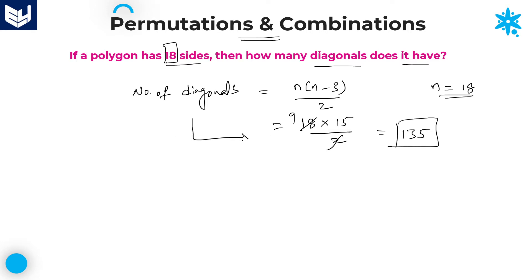Therefore, the number of diagonals for a polygon having 18 sides is 135 diagonals. Now, coming to permutations and combinations — in this concept, this problem is formula-oriented.